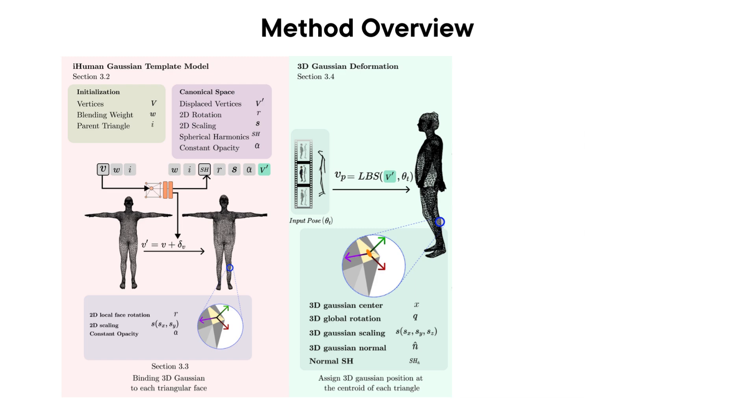We attach a Gaussian at the centroid of each triangle and bind the Gaussians by parametrizing them relative to the local triangular face. We explicitly compute the normal of each Gaussian by computing the normal of the triangular face.